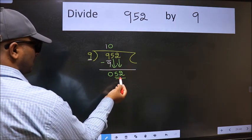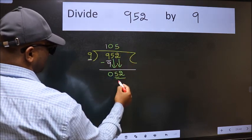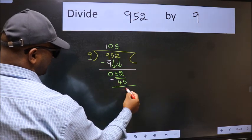Now 52. A number close to 52 in the 9 table is 9 times 5, 45. Now we should subtract. We get 7.